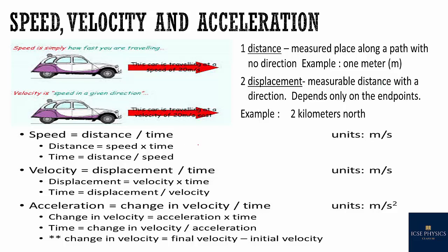Speed is distance divided by time, measured in meters per second. Velocity is also measured in meters per second, but velocity is speed in a given direction. For example, this car is travelling at a speed of 20 meters per second — that is speed. But if the car is travelling at a velocity of 20 meters per second east, that specifies a direction — that is velocity.